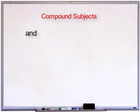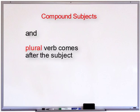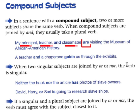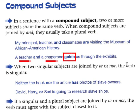Compound subjects can be joined by 'and', 'or', or 'nor'. If the compound subjects in a sentence are joined using 'and', you always use a plural verb. Like here: my principal, teacher, and classmates are all visiting the museum. The compound subject consists of three parts — principal, teacher, classmates — joined with 'and', so we choose a plural verb. Second example: a teacher and a chaperone guide us through the exhibits. Teacher and chaperone are joined with 'and', so the verb is plural.